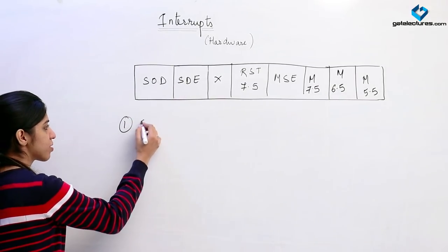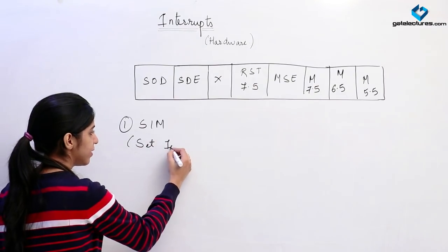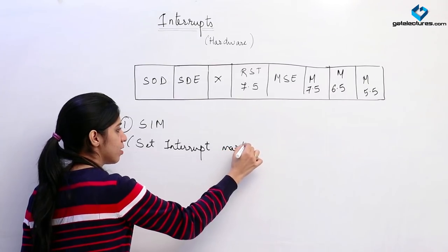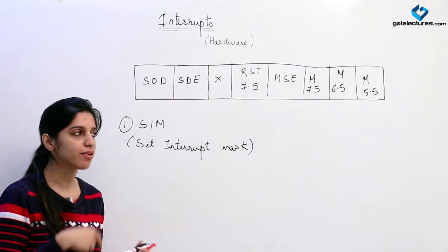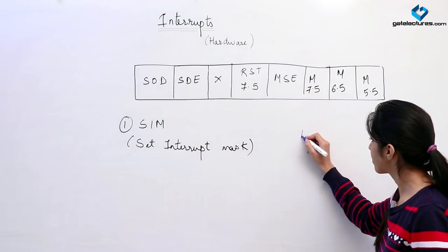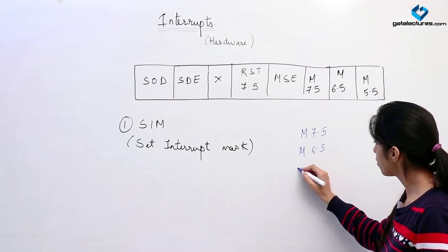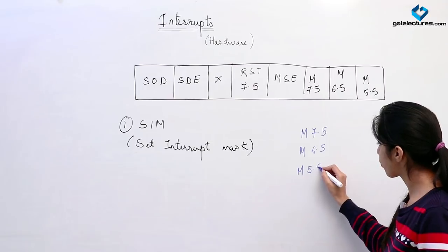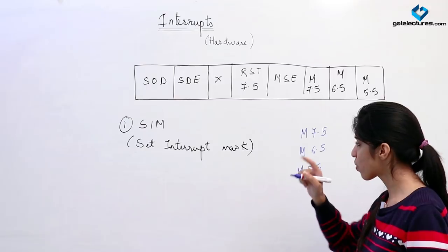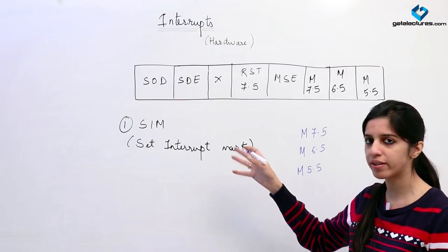Now we are looking at an instruction known as SIM, which stands for Set Interrupt Mask. In the circuit diagram we just saw, there were three blocks named M7.5, M6.5, and M5.5. These blocks are used to mask one particular interrupt. Whenever you use the IE flip-flop, it disables all the interrupts at once.